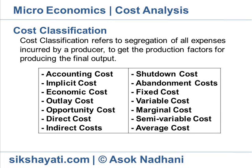Fixed costs include those costs which do not alter with changes in the quantity of production or size of output during the period. They remain constant during the specified period at any level of production and are related to fixed factors of production — for example, rent, interest payable, etc. These are also sometimes referred to as supplementary costs. Variable costs are those which change with the change in the quantity of output or production. These costs rise with an increase in output and decrease with a decrease in output.